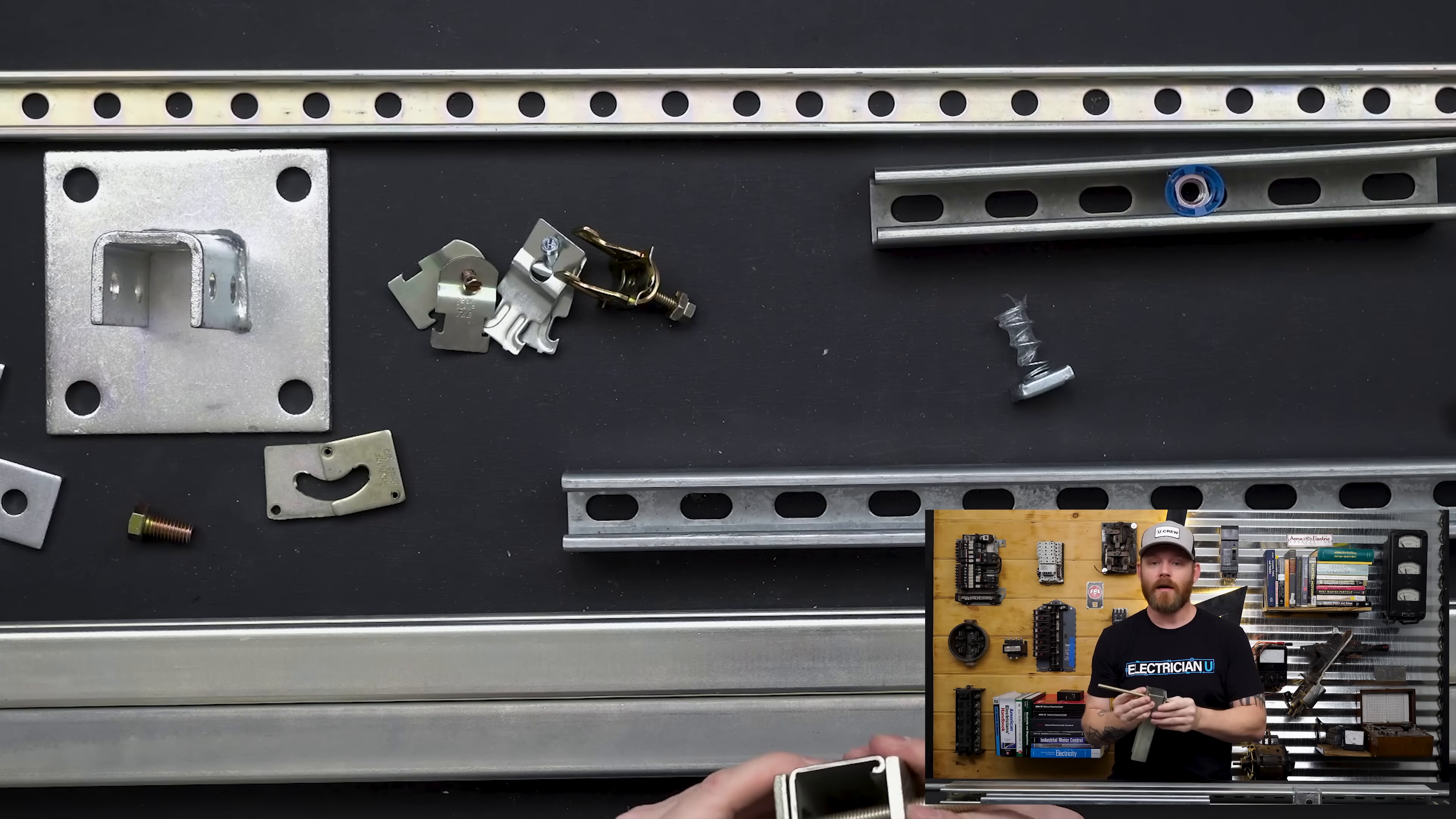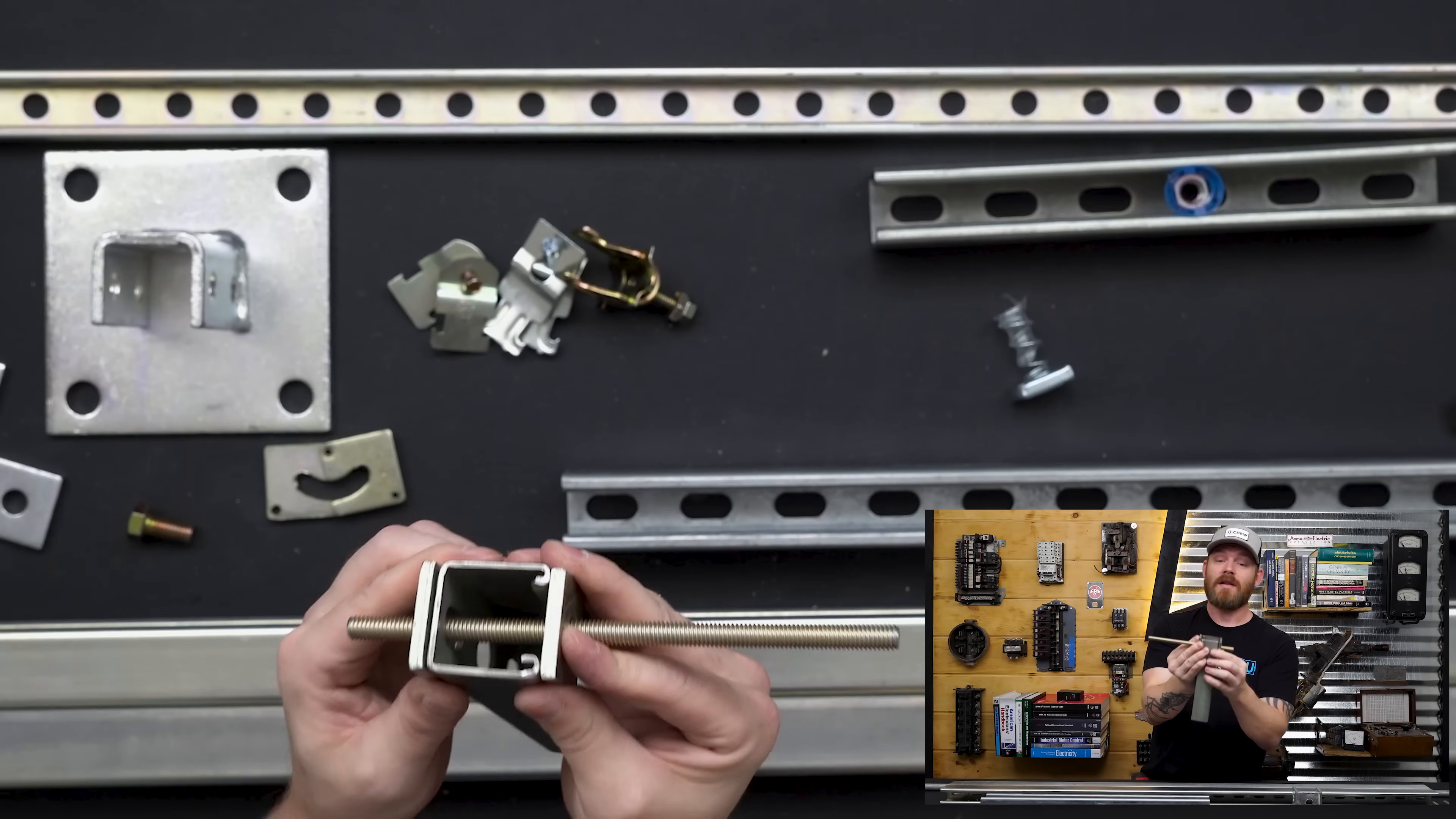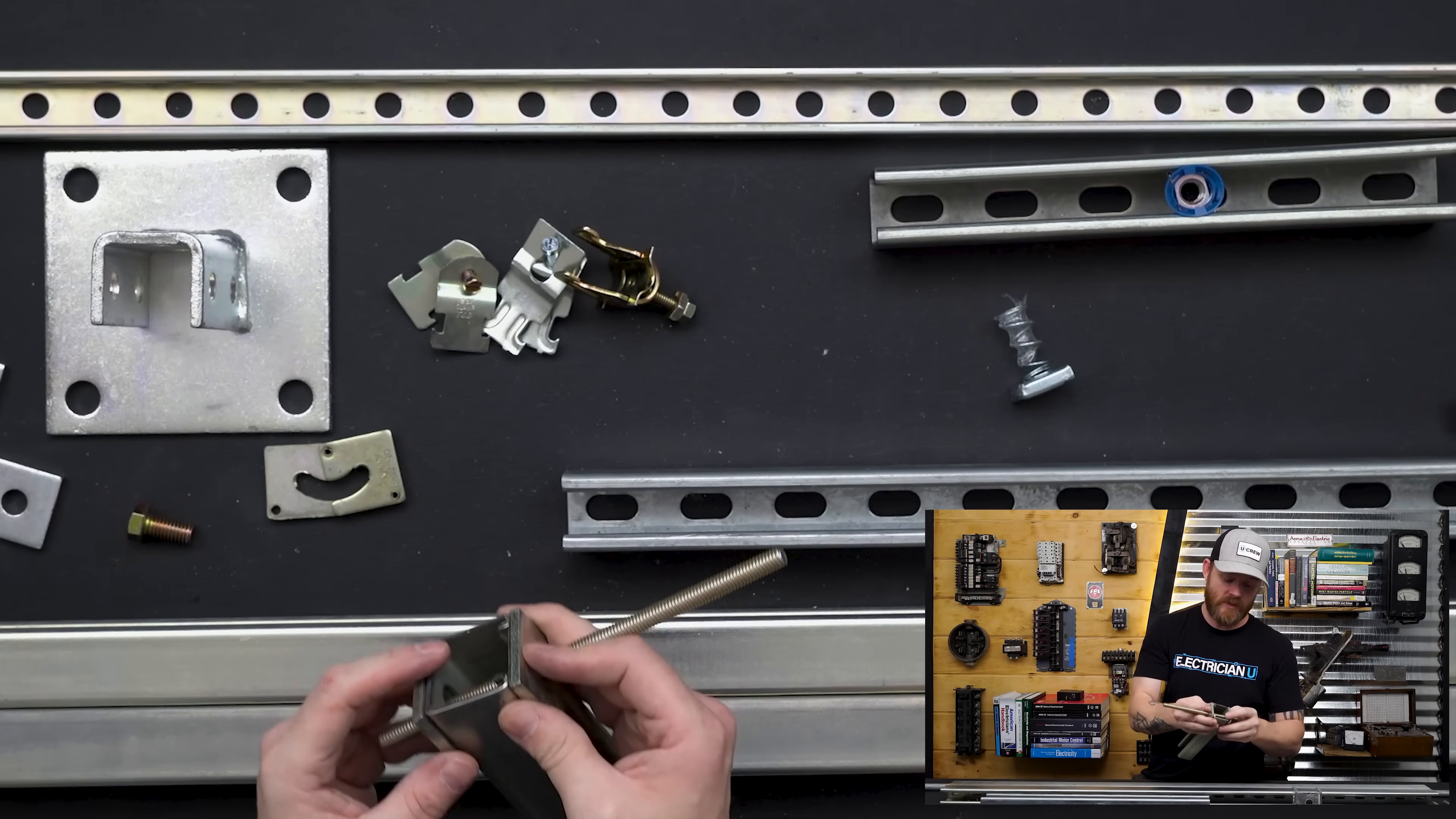So rather than using like a quarter inch fender washer or something like that, you start putting a few hundred pounds on that, boom, those things are just going to bend and the whole thing's going to fall. So the square washers allow us as a means of like constructing this with thread that allows us to have some load bearing weight capacity to it.